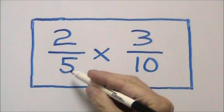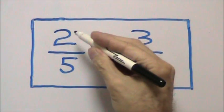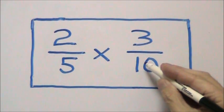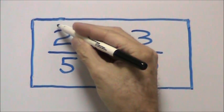In this case, in two-fifths times three-tenths, two is a factor of ten. So we cross-cancel with two.